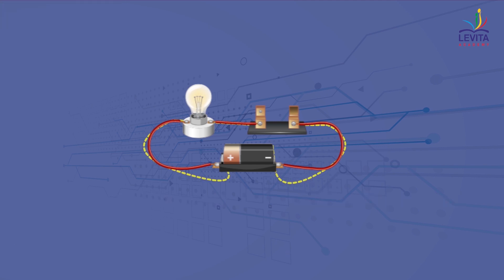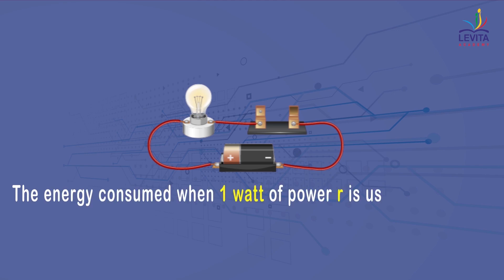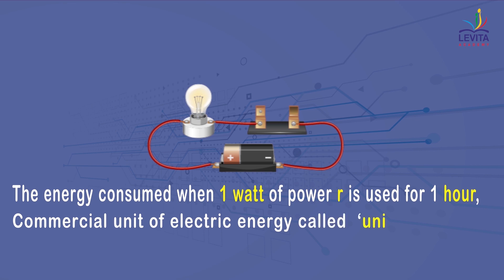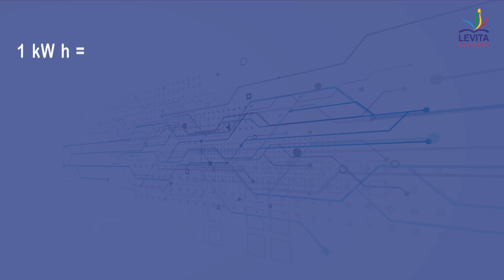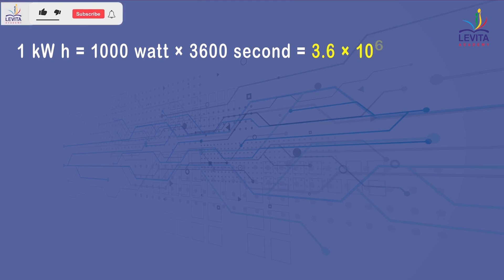So, 1 watt hour can be defined as the energy consumed when 1 watt of power is used for 1 hour and this is also the commercial unit of electric energy that we commonly call as unit. One kilowatt hour = 1000 watt × 3600 seconds. That implies 3.6 × 10⁶ watt second. That is equal to 3.6 × 10⁶ joule.